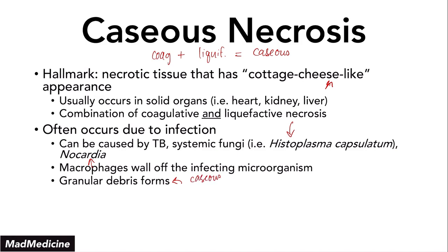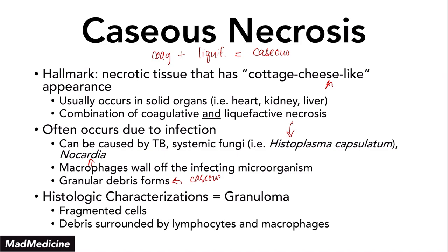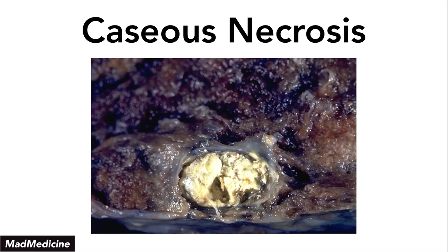When it comes to histology, you're going to see a granuloma — a fragment of cells forming with debris surrounded by lymphocytes and macrophages. If you look at the gross image of caseous necrosis, you can see the debris, it's kind of cheese-like, along with a surrounding area of debris and necrosis.